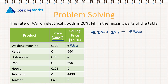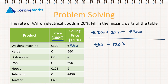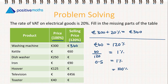The next example: the selling price of the kettle is €60, but €60 is equal to 120%. So we need to find 100%. First, we find 1% by dividing 60 by 120, which gives 0.5. Then to find 100% we multiply by 100, giving us €50.